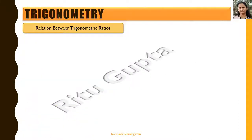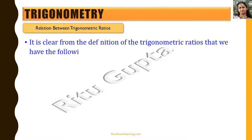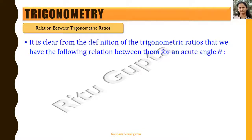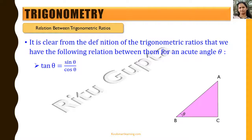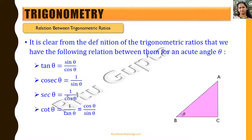Now let's see the relations between trigonometric ratios. It is clear from their definitions that for an acute angle theta: tan theta equals sin theta divided by cos theta; cosec theta equals 1 divided by sin theta; sec theta equals 1 divided by cos theta; and cot theta equals 1 divided by tan theta. These relations are very obvious from the definitions of the trigonometric ratios.